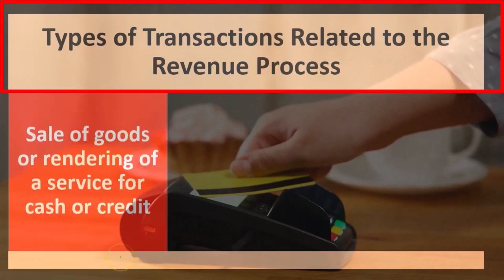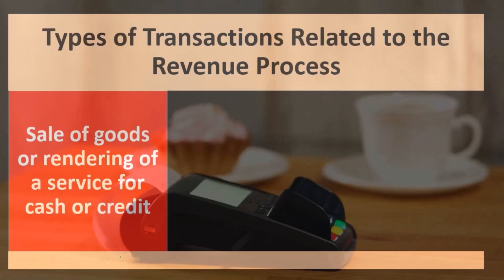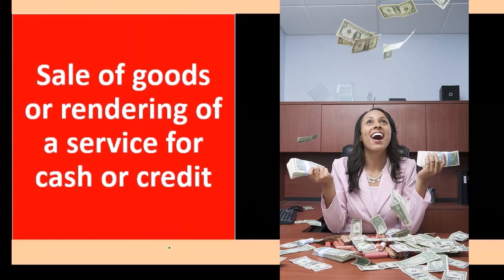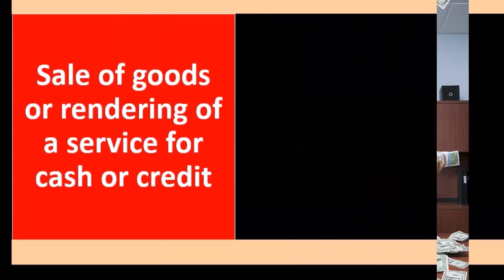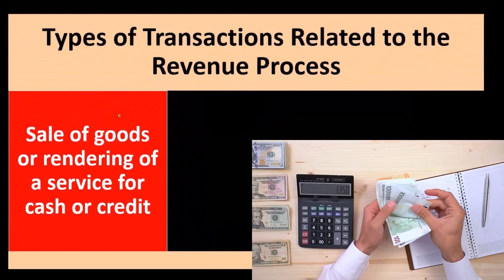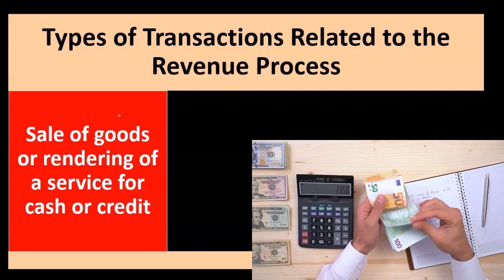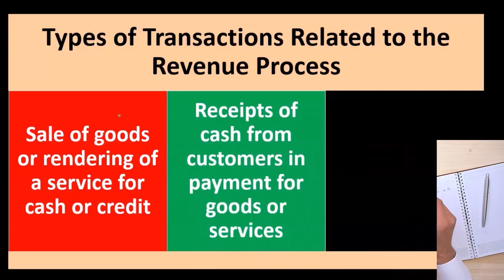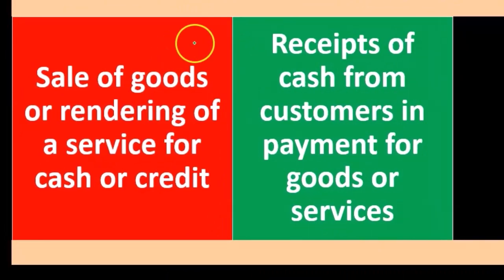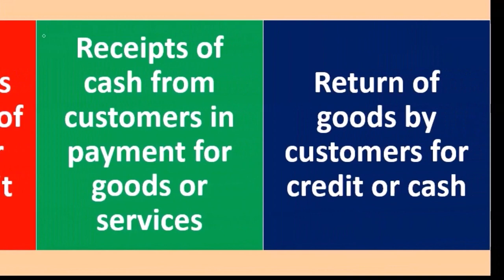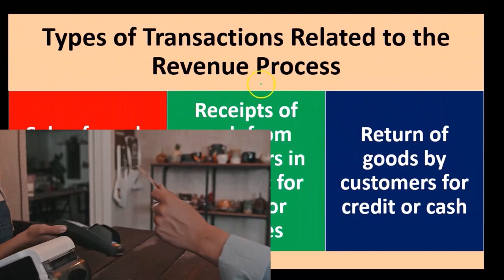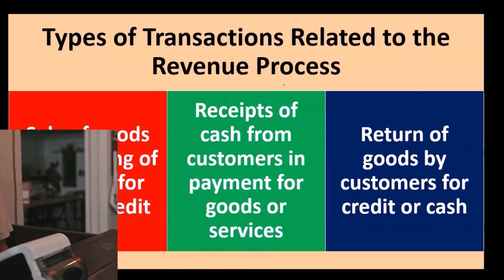What kind of transactions are we going to be looking at related to the revenue process? We're going to have sales of goods or rendering of services for cash or credit — these are the transactions we'll be testing. We also want to test the receipt of cash from customers for goods and services. And then we have the return of goods by customers for credit or cash — these are the transactions we're concerned with regarding revenue recognition.